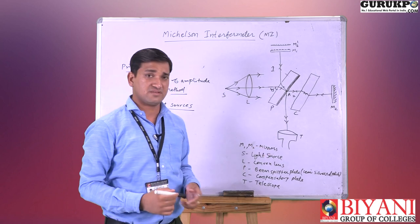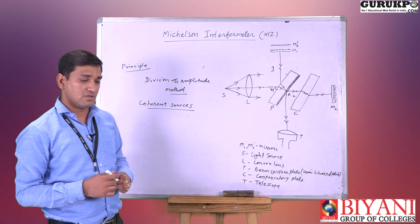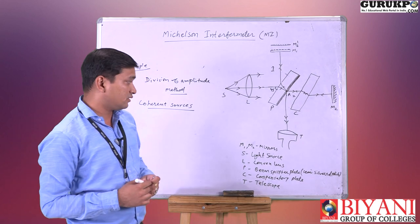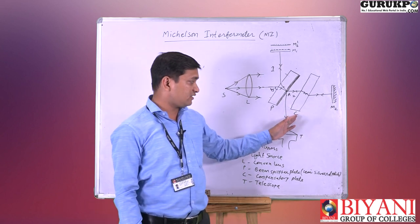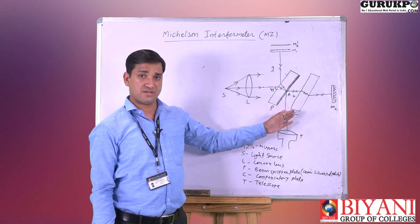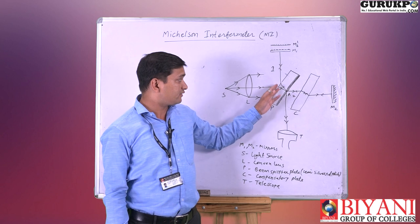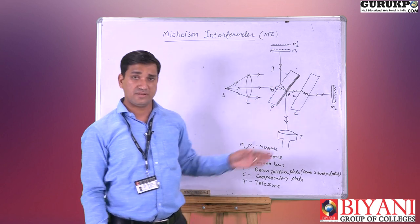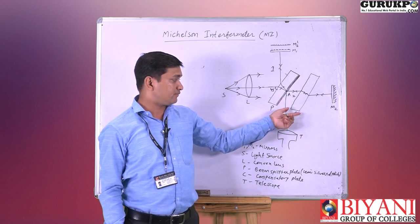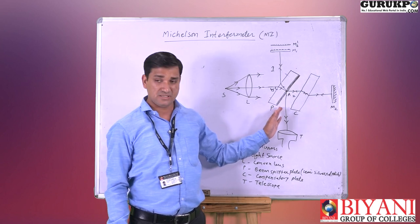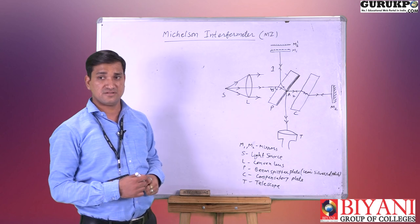They meet at point A and the fringes are observed in the telescope T. This completes the construction of the Michelson interferometer. This instrument is used to find the wavelength and refractive index. Here, P is the beam splitter plate and the plate C is known as the compensating glass plate. If we remove this compensating glass plate, then ray 1 would pass through the plate twice. So, to equalize the optical path difference between ray 1 and ray 2, we use the same material and same thickness as plate P, placed parallel to it — this is known as the compensating glass plate.